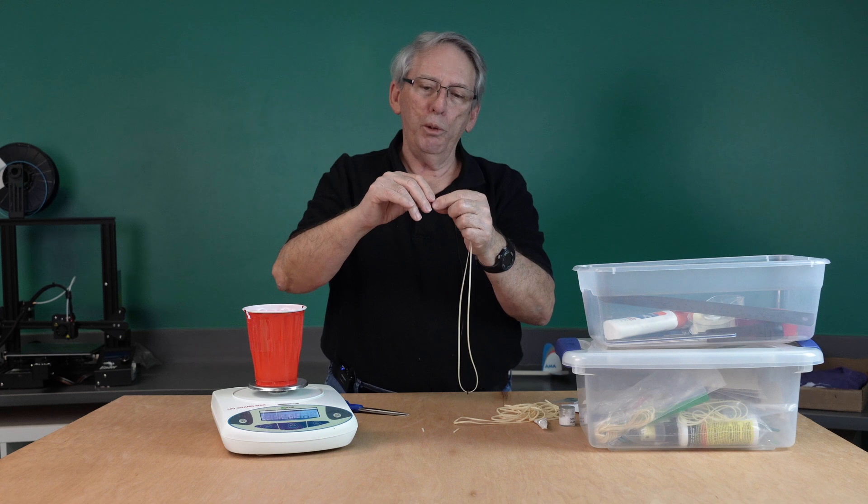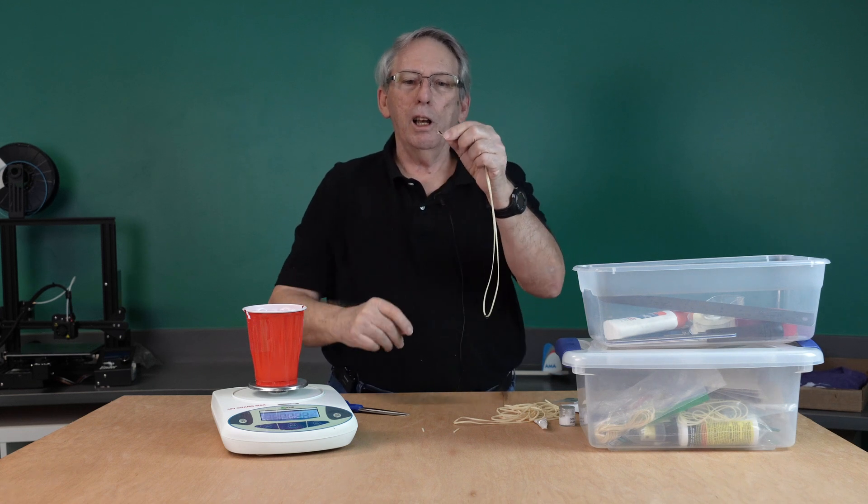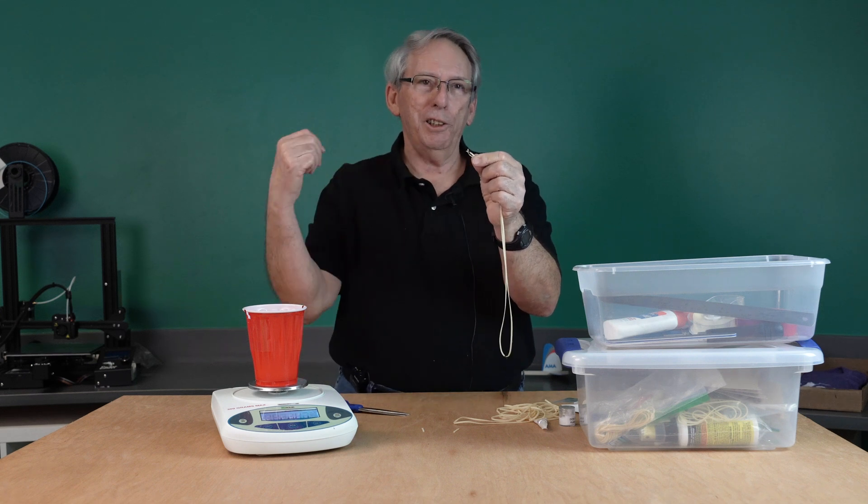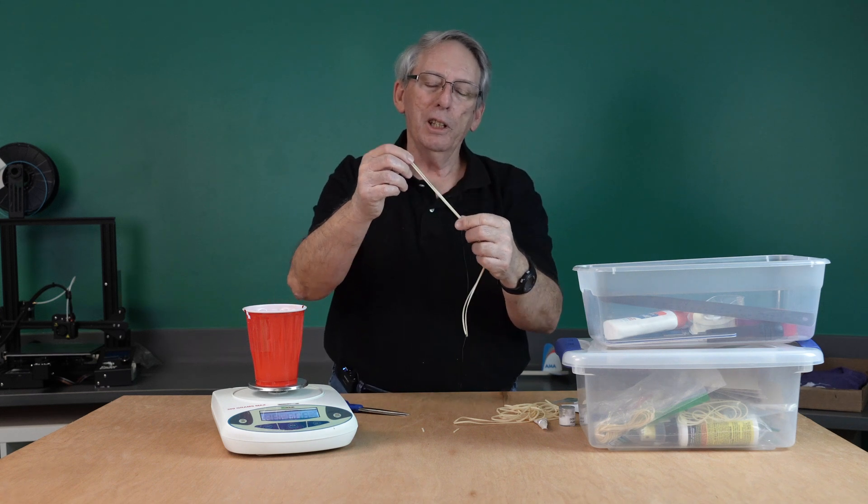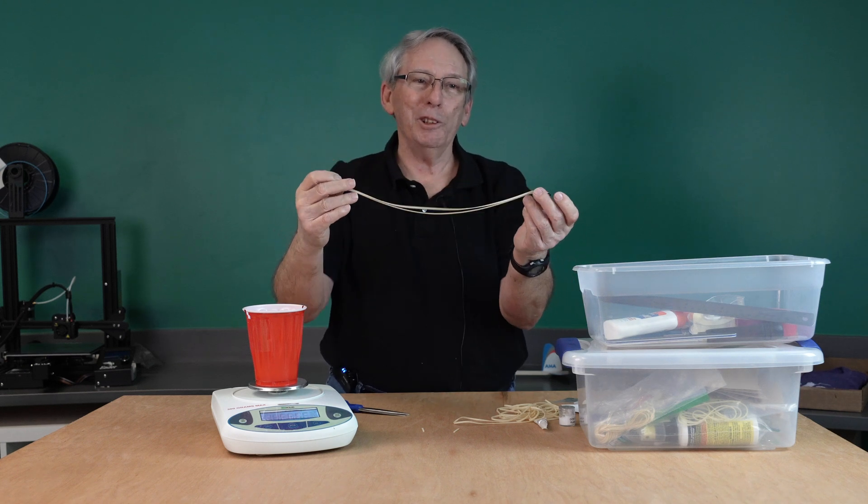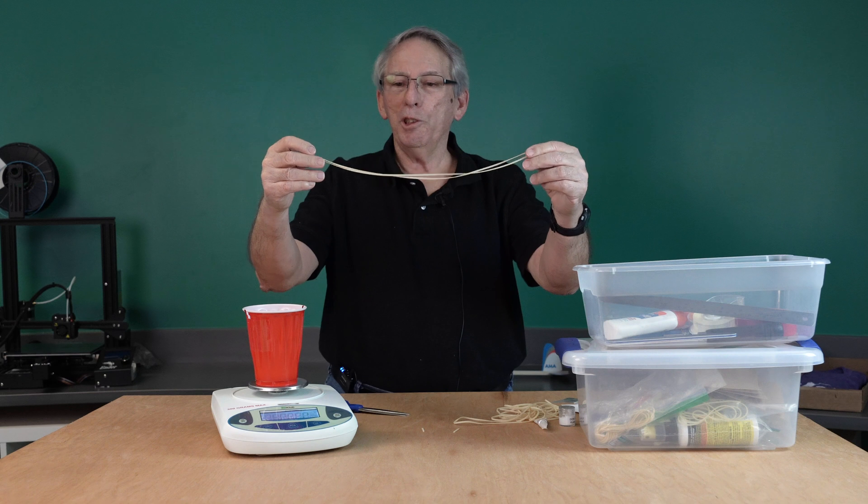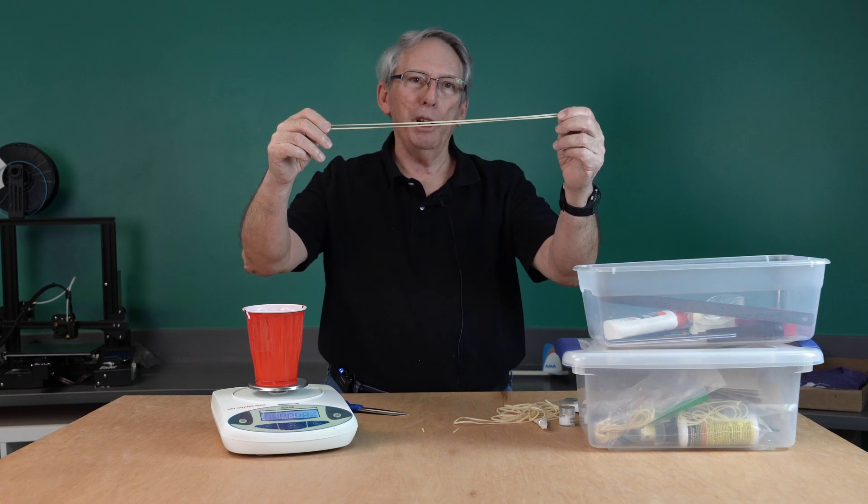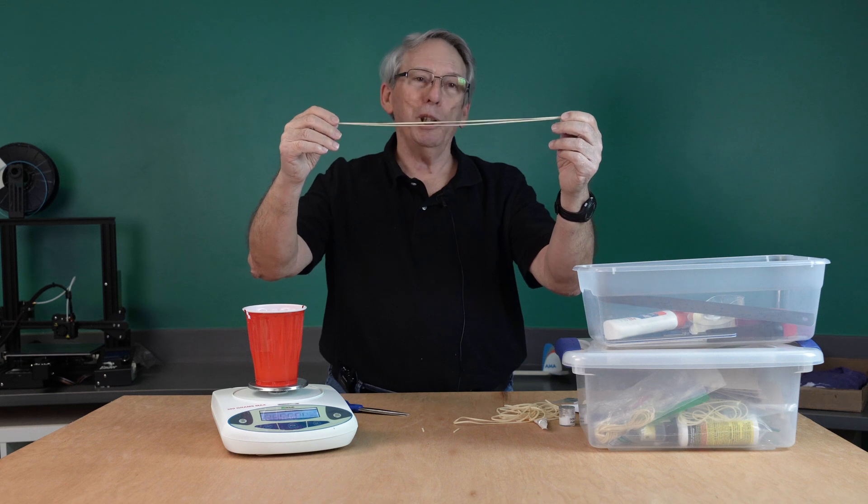When you wind or put the motor on the airplane, always put the knotted end of the rubber motor at the tail end of the airplane. You don't want this knot rotating with the propeller slapping around on the motor stick. So now you have a motor that is ready to be wound up and placed on your airplane.